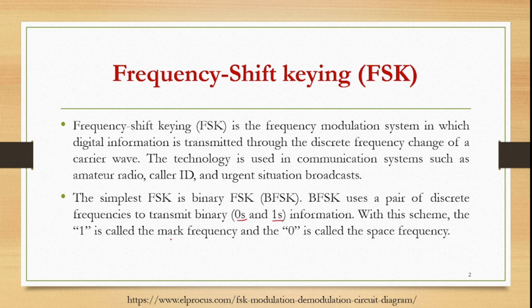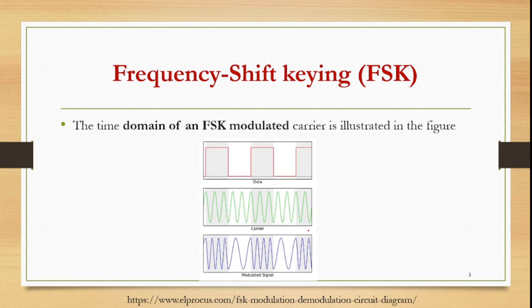In BFSK, the one is called the mark frequency and the zero is called the space frequency. Two frequencies are used simultaneously — mark for logic 1 and space for logic 0. You can see the time domain of the FSK modulated carrier waveform. Here this is the input data — this is called a one and this is called a zero — and this is the carrier signal.